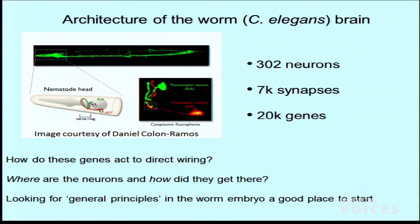C. elegans is also advantageous because you can tag each neuron specifically — you can express a fluorescent dye in whatever neuron you want and actually look at it in a microscope. This image shows a worm stretched out in a microscope, with neurons whose processes extend along the length of the animal. Because it's so simple, you can ask questions about where genes are expressed, how they direct wiring, where all the individual cells are. We have a family tree of every cell, but we don't know volumetrically or in time where any neuron is at any particular time.